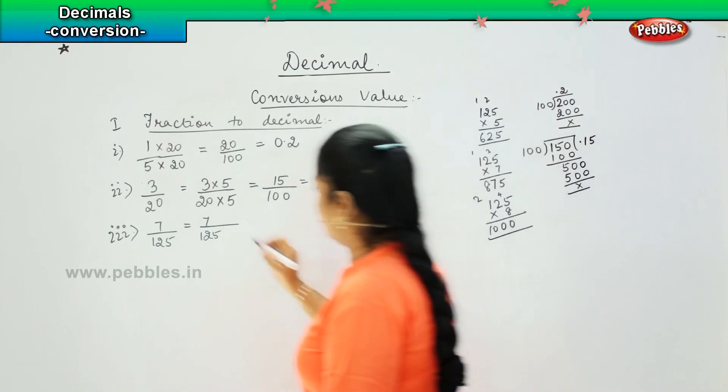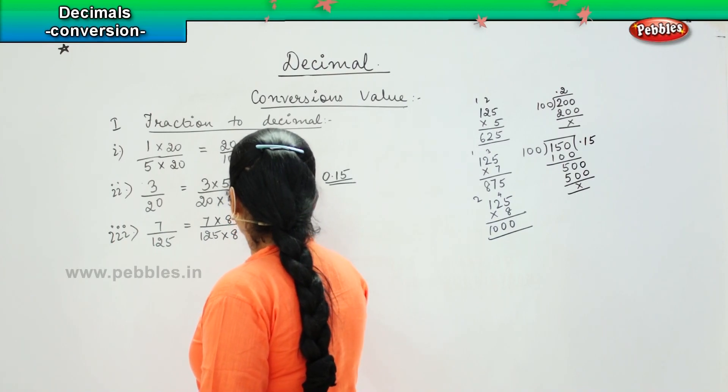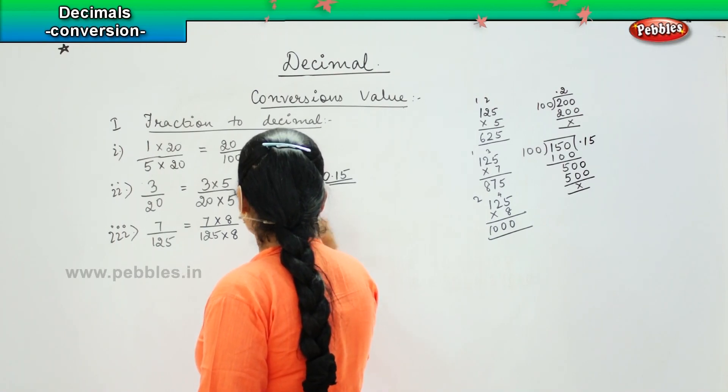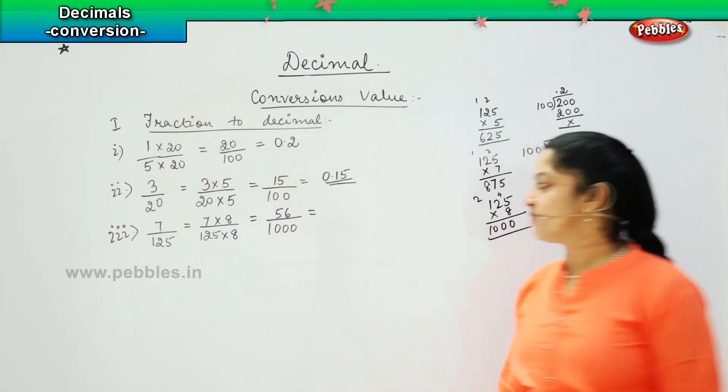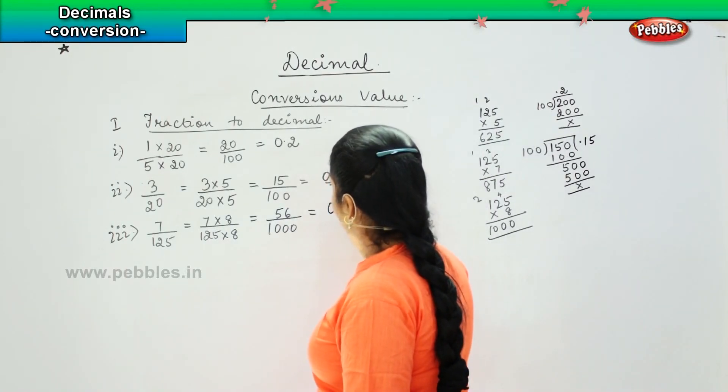So here I will be multiplying my numerator and denominator by 8. So 7 × 8 are 56 and 125 into 8 is 1000. So this becomes 56/1000. So my answer will be 0.056.